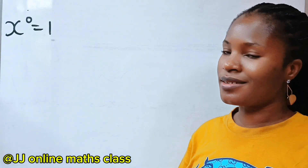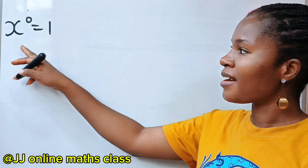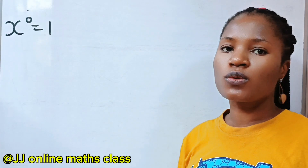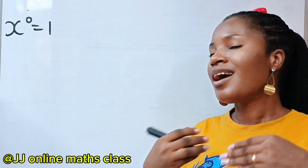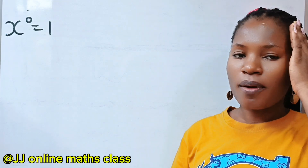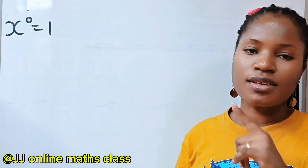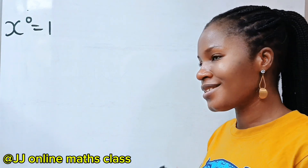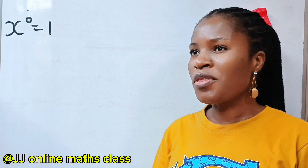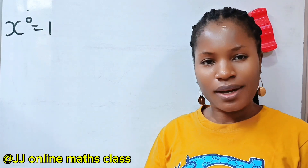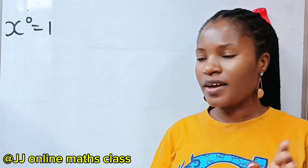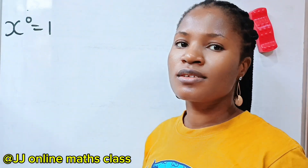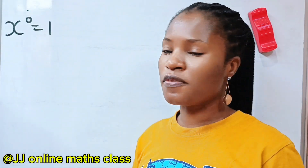I'll give you two reasons why x to the power of 0 is equal to 1. That is, any number raised to the power of 0 is equal to 1. The first reason is this — I want us to notice a pattern. For example, let's discuss powers of 2.